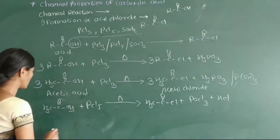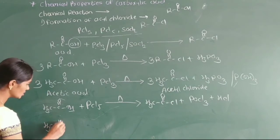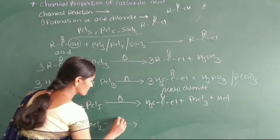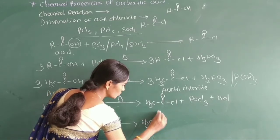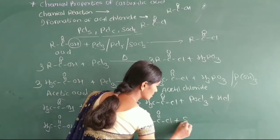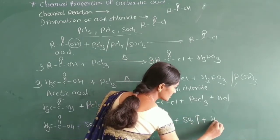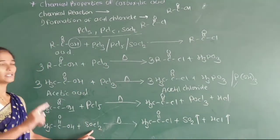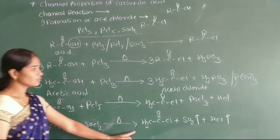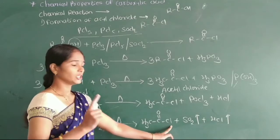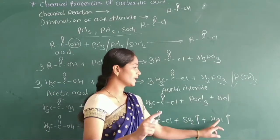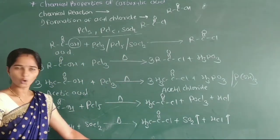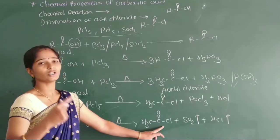Now using the thionyl chloride (SOCl2) reaction: this acid reacts with thionyl chloride. For example, CH3COOH reacts with thionyl chloride (SOCl2) to give CH3COCl plus evolution of SO2 gas and HCl gas.